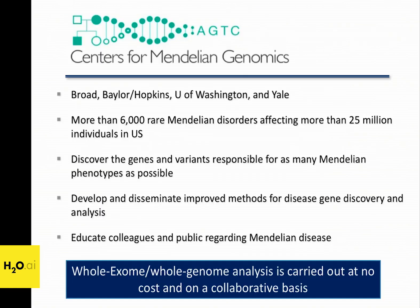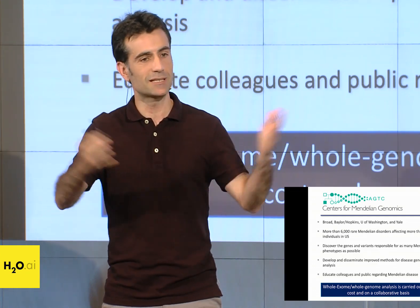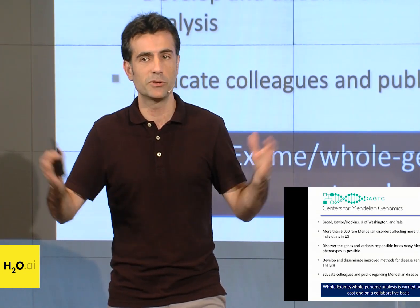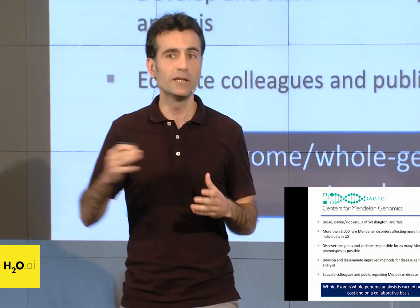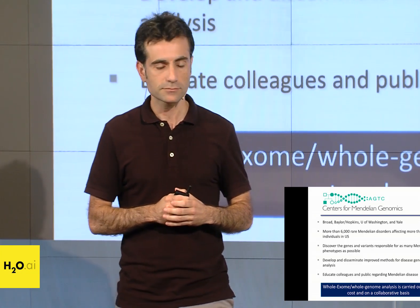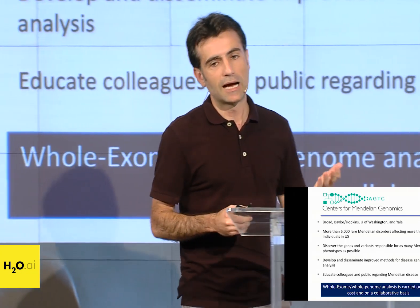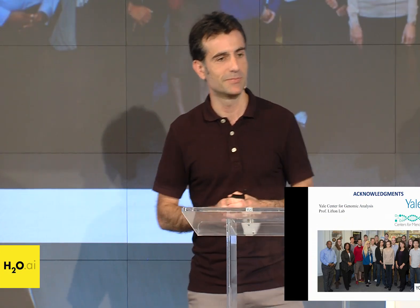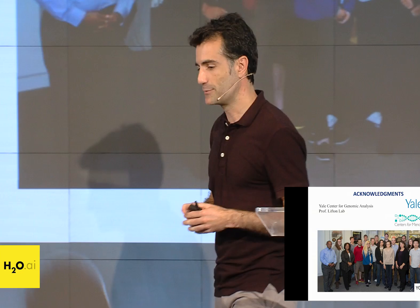To finalize: most of the investigations I showed you are funded by NIH through what we call the Center of Mendelian Genomics. Yale is one of those four centers. We are trying to find the genes responsible for what we call rare Mendelian disorders. There are 6,000 rare Mendelian disorders — they are rare in the sense that only a few individuals are affected, but when you add that up, more than 25 million people in the US alone are affected. Like the Human Genome Project, all of this is for a final goal: understanding human disease. Thank you very much — I'll take questions later.